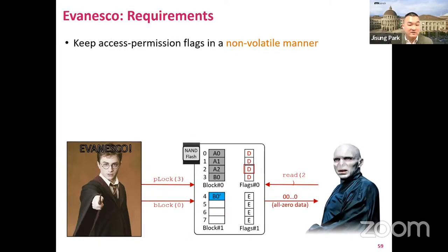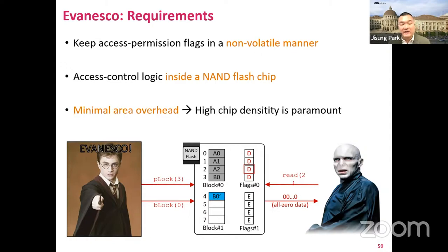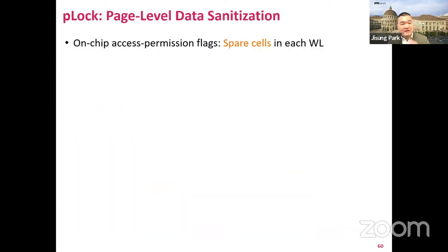There are two design requirements for Evanesco. First, the chip must keep the per-page access permission flags in a non-volatile manner. We also need to put the access control logic inside the NAND flash chip, as other system components like flash controllers and FTL can be compromised by adversaries. The key challenge is to make the area overhead minimal, as high density is the paramount requirement in modern NAND flash memory. We also propose B-Lock in the paper, but the high-level idea is quite similar to P-Lock.